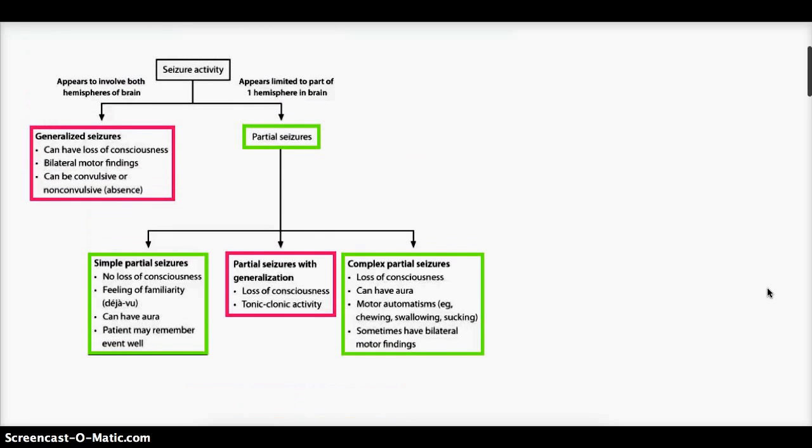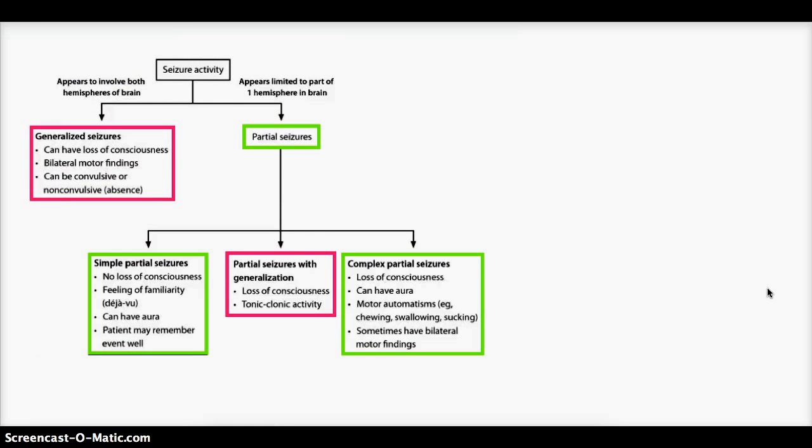Now moving on to the classification of seizures. Seizure activity can be categorized into two groups. One being generalized, where the whole brain is involved, i.e. both hemispheres. And the other being partial, where there is just a focal area involved. Generalized appears to involve both hemispheres of the brain, whereas partial appears limited to part of one hemisphere in brain.